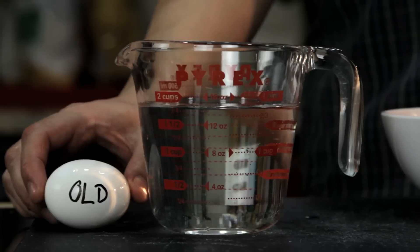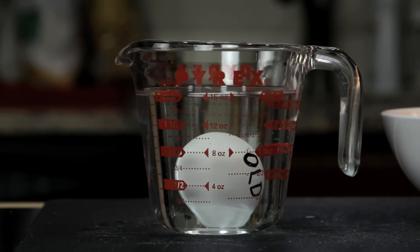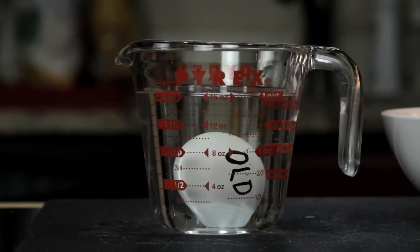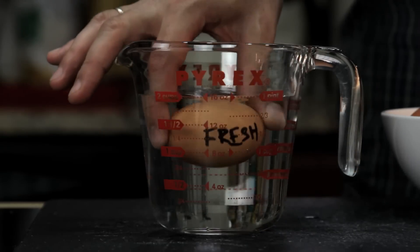You can also tell how fresh an egg is by carefully putting it into a cup of water. As an egg ages, the air pocket in the fat end is going to get bigger and bigger, which will make the egg stand upright, or sometimes even float. A really fresh egg will sink and lie flat on its back like this.